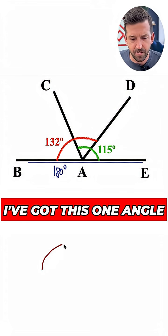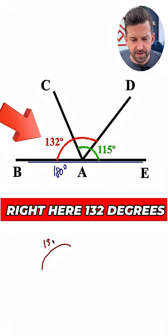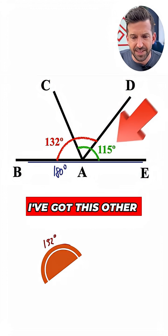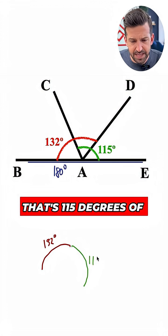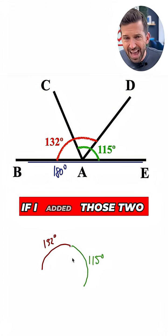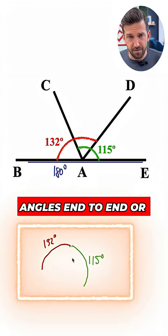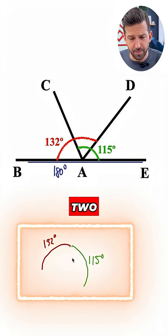I've got this one angle right here, 132 degrees is this amount of rotation. Then I've got this other angle, 115 degrees of rotation. Now I'm going to kind of draw it end to end. That's 115 degrees of a rotation. Now if I added those two angles end to end, or if I rotated consecutively those two amounts...